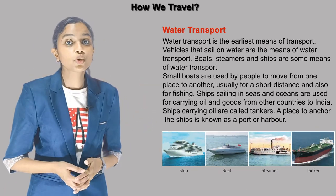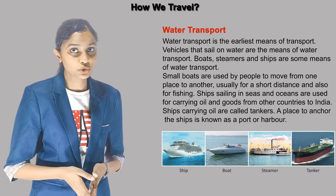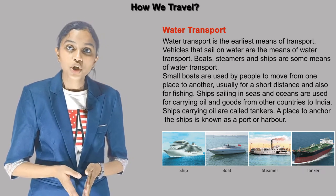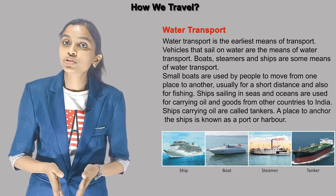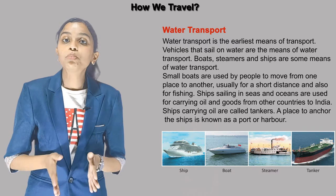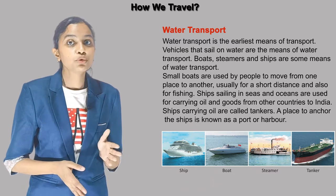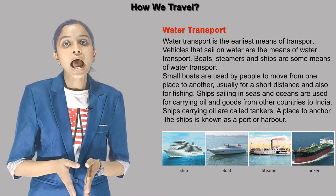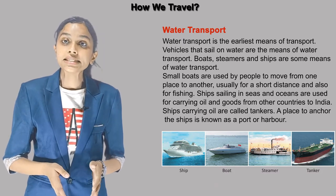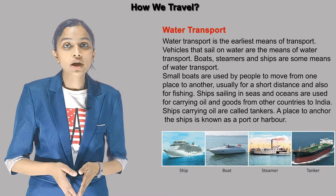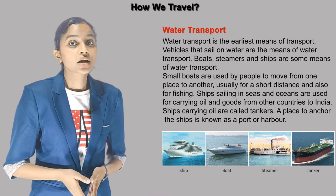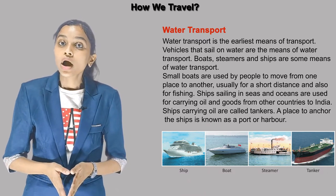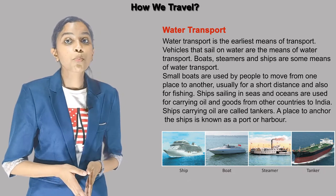Water transport is the earliest means of transport. Vehicles that sail on water are the means of water transport. Boats, steamers and ships are some means of water transport. Small boats are used by people to move from one place to another, usually for a short distance and also for fishing. Ships sailing in seas and oceans are used for carrying oil and goods from other countries to India. Ships carrying oil are called tankers.